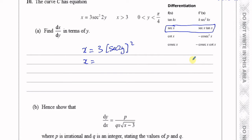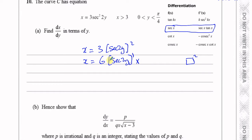To differentiate something like this you've got to use the chain rule. The main function is something to the power of 2. To differentiate that, you multiply by the power and take 1 from the power — so I'm going to multiply by 2, that gives me 6. Then I take 1 from the power, so that gives me sec(2y) to the power of 1. Then I have to multiply by the differential of what's inside the function.